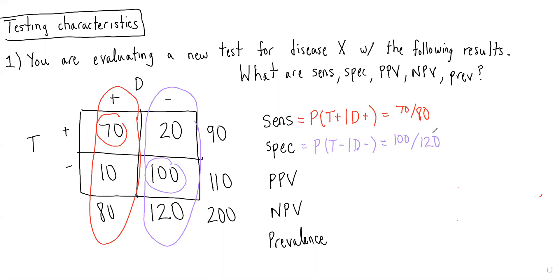For PPV, we remember this is equal to the probability of having the disease given you had a positive test result. So in this case, it would be 70 over 90.